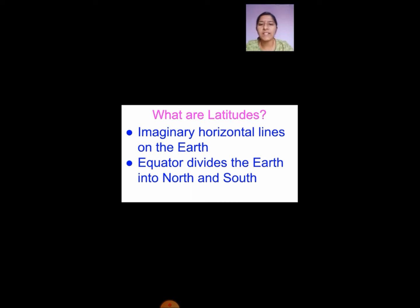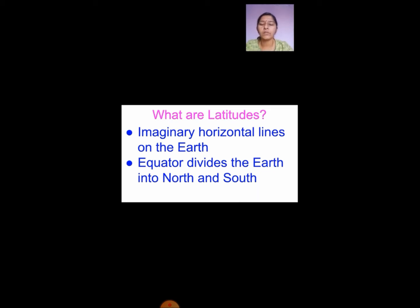What is an equator? Equator divides the earth into north and south. So when you see the globe, on top you will have the north pole and down you will have the south pole. In between, a line will divide the globe — those dotted lines are called the equator. So latitudes are imaginary horizontal lines on the earth.